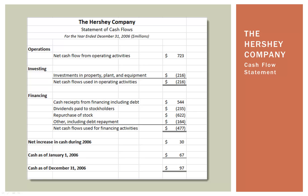Hershey also repurchased $622 million of its own stock, and had additional cash outflows for debt repayment and things like that. Most businesses have outstanding loans and have to make payments on those loans — over the course of this year, Hershey paid out $164 million cash to service their debt. When we add and subtract all of this up, it comes out to a positive cash flow of $30 million.